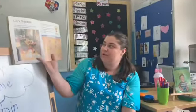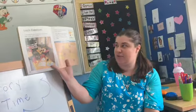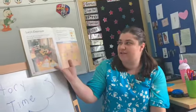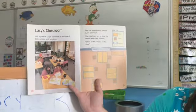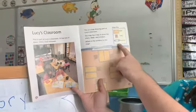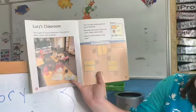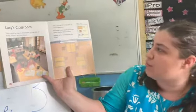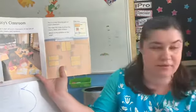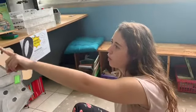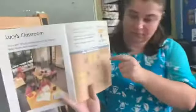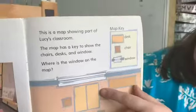This is part of Lucy's classroom. It has lots of desks, chairs, and windows — just like ours. This is a map showing part of Lucy's classroom. The map has a key to show the chairs, desks, and windows. Where is the window on the map? If I look at the map key, it says the window is a white rectangle, and I see it at the top of the map — so that must be where the window is.